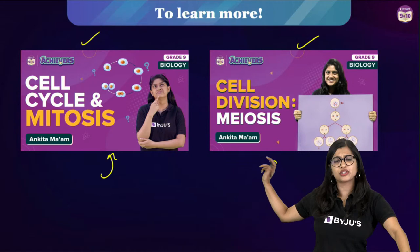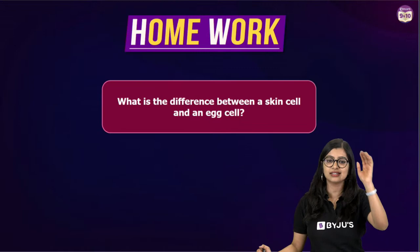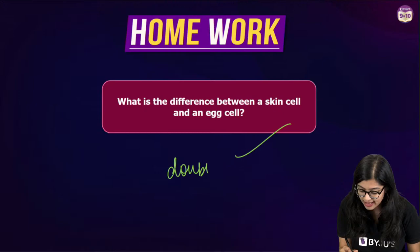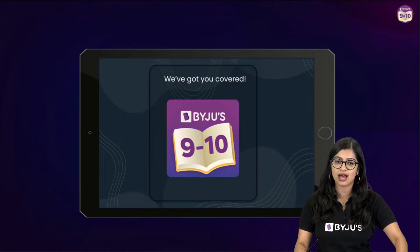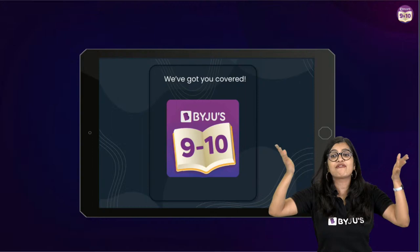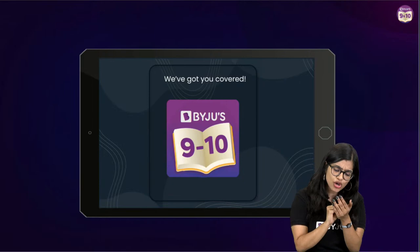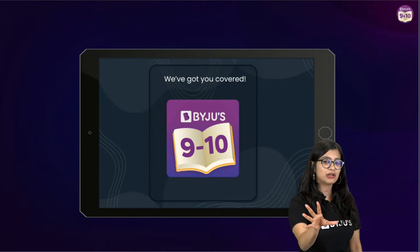I'd recommend watching Ankita ma'am's videos where she has gone in greater detail on cell cycle, mitosis, and meiosis with all the phases. Here's a homework for everybody: tell me two points of difference between a skin cell and an egg cell. Let me know further doubts in the comments. Today my promise was to simplify cell division — I don't want to go into too much detail and scare you. Learn the basics, and when you go to technicalities it becomes easy. In your textbook the detail isn't much, so don't worry.